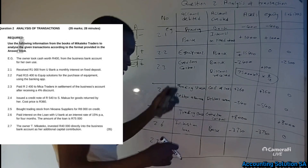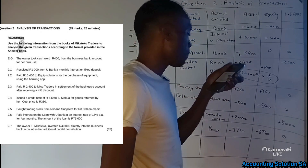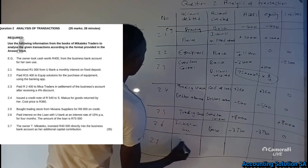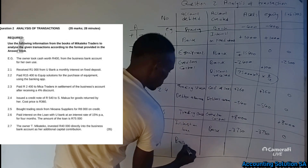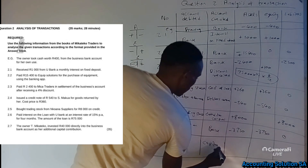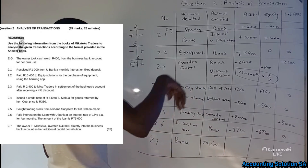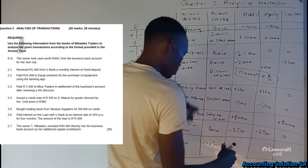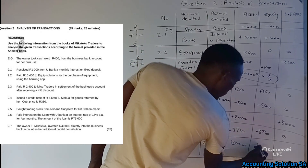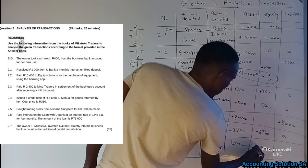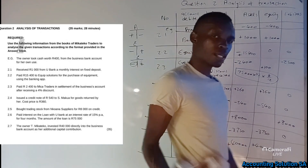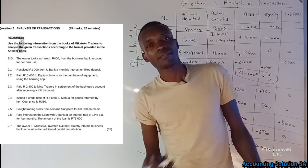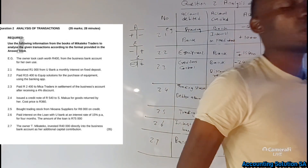The owner invested R40,000 as a capital contribution into the business. Bank increases — assets increase on the debit side, so Bank is debited. Capital, which is equity, also increases — equity increases on the credit side, so Capital is credited. The amount is plus R40,000 and plus R40,000. That's it — thank you for watching!